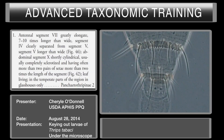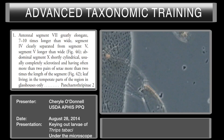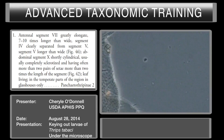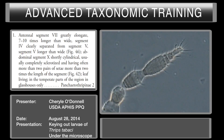Starting with couplet number one of the Thripidae key: antennal segment number seven, greatly elongated, seven to ten times longer than wide. Focusing on the antenna and counting from the base — one, two, three, four, five, six, and seven antennal segments. Looking at segment seven, is it seven to ten times longer than it is wide? No, that is not the case for this specimen.